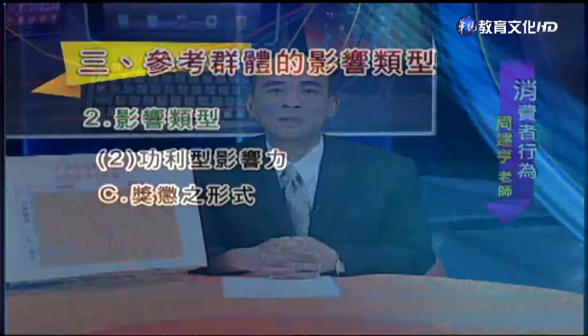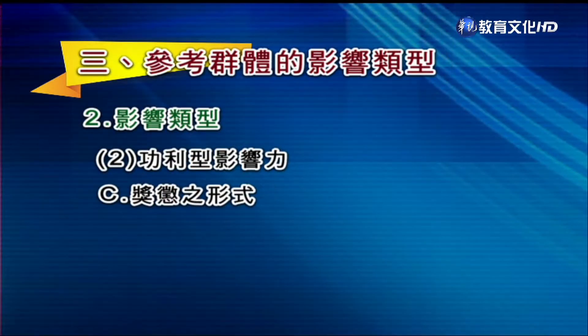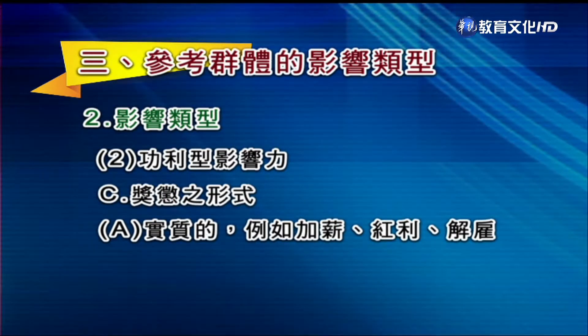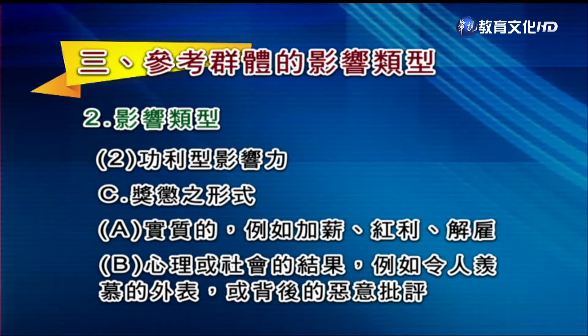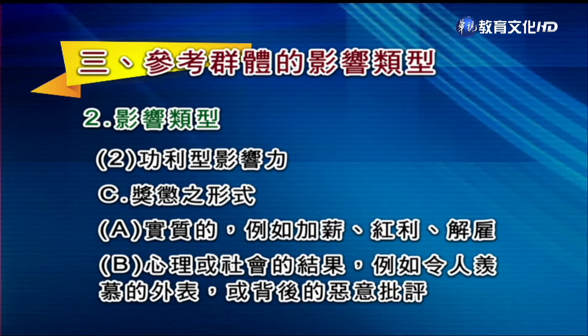举例来讲，有的公司要求上班时穿正式服装，有的公司却鼓励穿简便衣服，比如某些高科技公司鼓励穿牛仔裤跟T恤，像Google等公司。如果不这么穿，不一定公司会处罚你，但周遭同事会觉得你不够专业。这种奖惩形式有两种：实质的，如加薪、红利或解雇；心理或社会的，如令人羡慕的外表或背后恶意的批评。